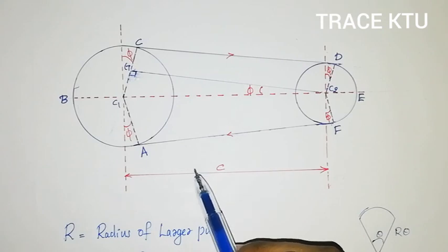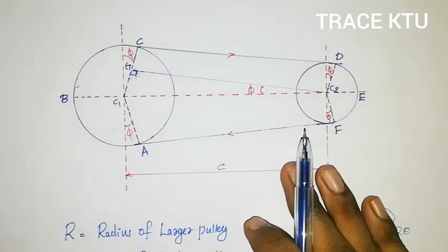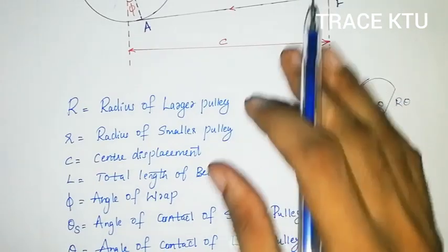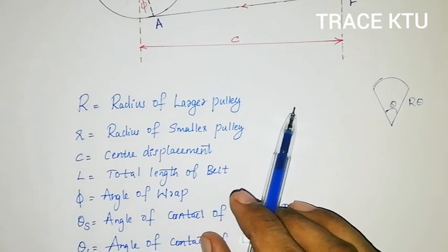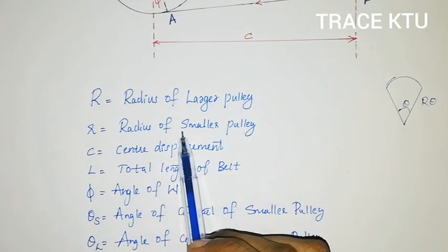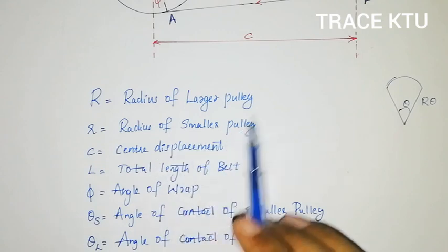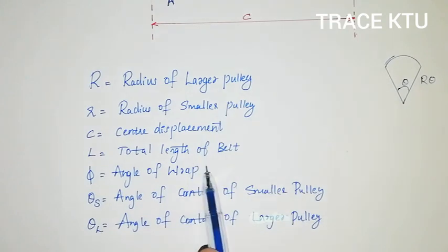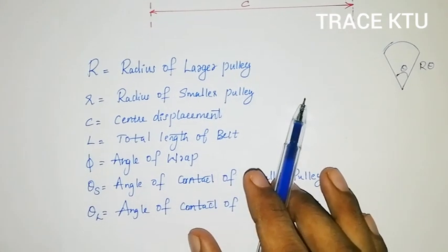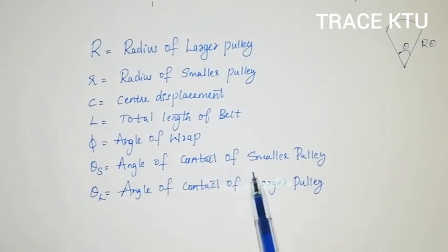I will show you the parameters. Capital R is the radius of the larger pulley, small r is the radius of the smaller pulley, C is the center displacement — the center-to-center distance. L is the total length of the belt, and theta is the angle of wrap of the belt.